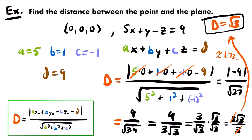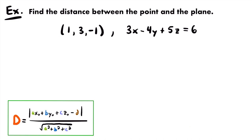Let's take a look at another example. For our next example, we once again want to find the distance between a point and a plane. We're given a point of (1, 3, -1) and a plane of 3x - 4y + 5z = 6. We're finding the same type of distance as in the previous example, so we'll use the same formula.